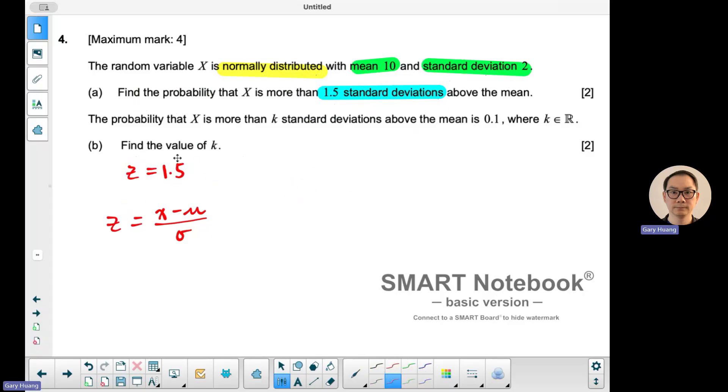Or better yet, you already have the z-score, you can just do a normal cdf with the lower boundary being 1.5, the upper boundary being positive infinity, and a mean of 0 and the standard deviation of 1 because it's 1.5 standard deviations above.